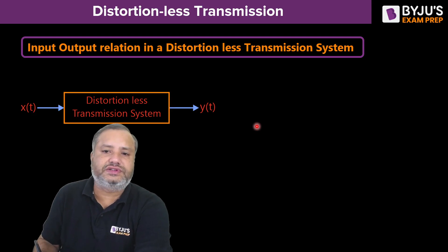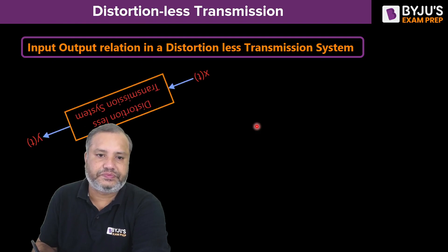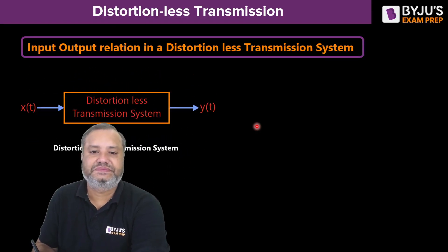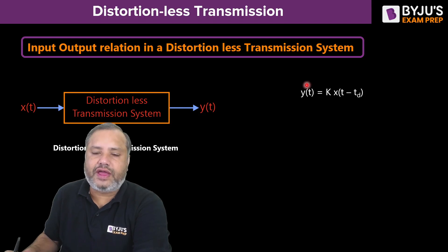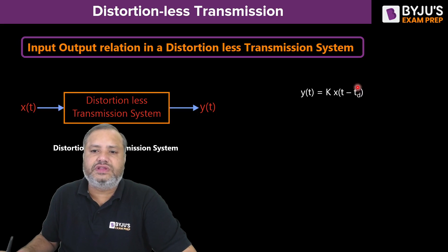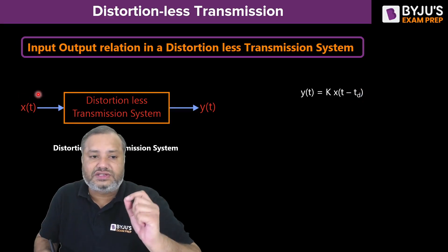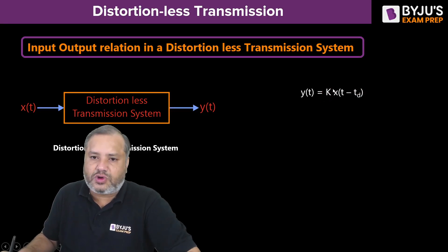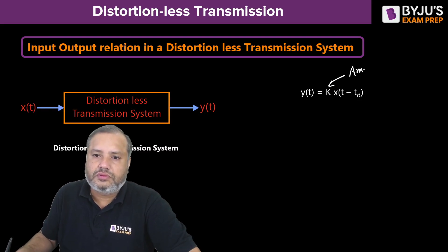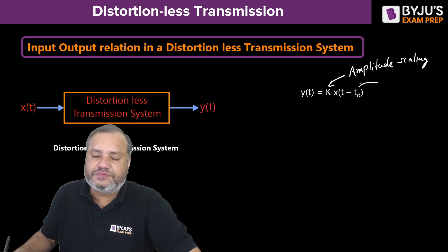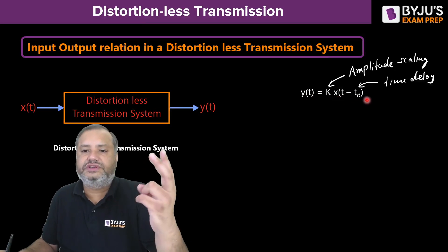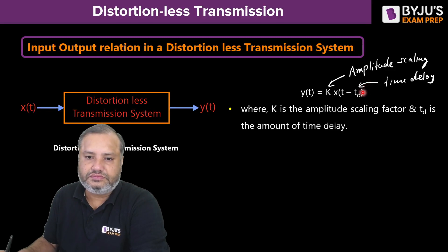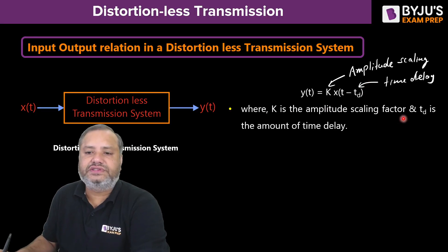We will derive an input-output relation for a distortionless transmission system to better understand the process. The output y(t) is k times x(t − td). Here td is the amount of delay, meaning the signal x(t) has undergone a time shifting operation and also amplitude scaling. k corresponds to amplitude scaling and td corresponds to time delay.